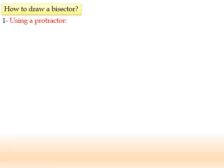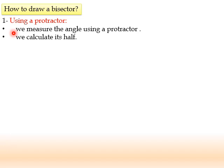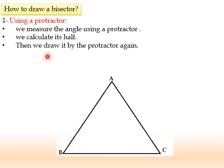Now, how to draw a bisector? We have two ways. The first one, by using our protractor. We measure the angle using a protractor. Then, we divide it by 2 to calculate its half. And, we draw it by protractor again.